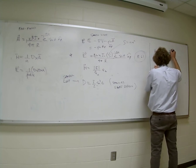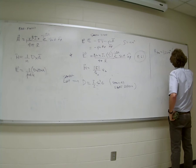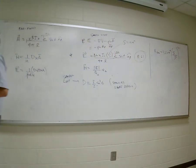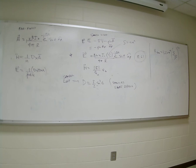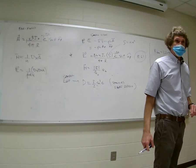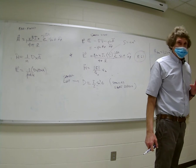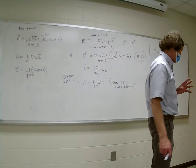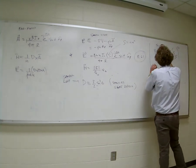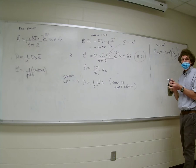When all is said and done, the radiation resistance of a small loop is 320π⁴ times (S/λ²)², where S = πA² is the surface area of the loop. That formula tells you everything you need to do a problem. I wouldn't expect you to memorize this one — I would give it to you. I expect you to know the radiation resistance for the short dipole and the half-wave dipole.